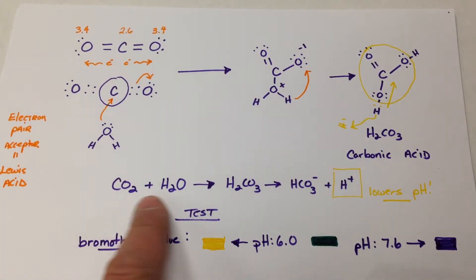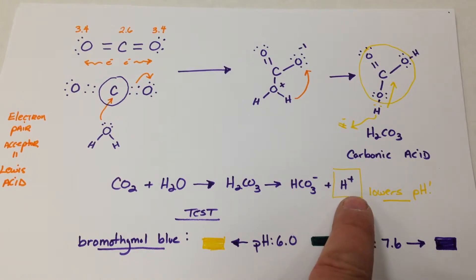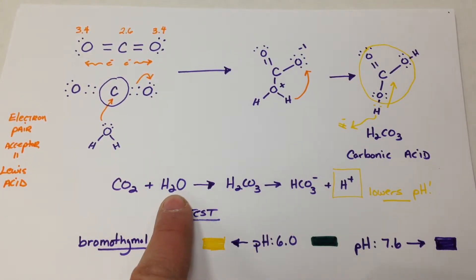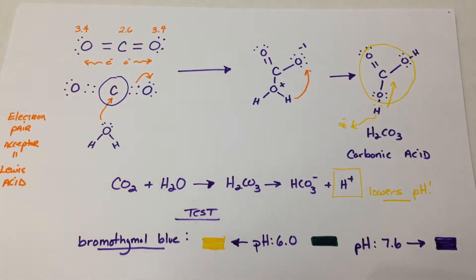So CO2 in water makes carbonic acid, which dissociates into a proton, which lowers our pH. So rainwater naturally has a pH lower than 7 because of that.